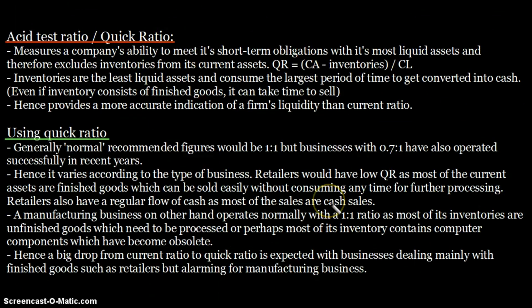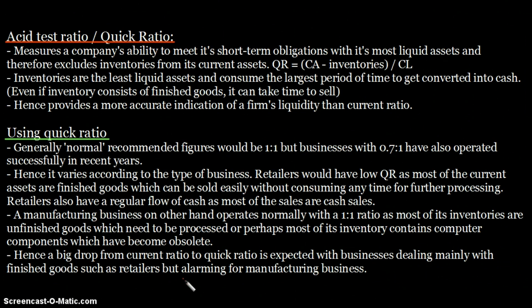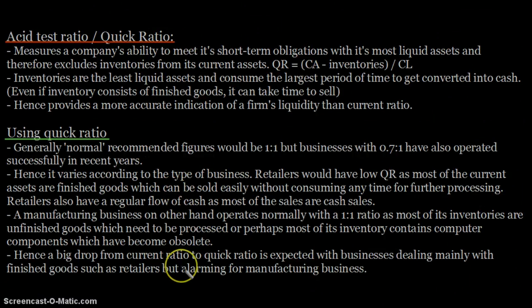If you subtract inventories from current assets to get the quick ratio, it will likely be less than the current ratio. A big drop from current ratio to quick ratio is expected for businesses dealing mainly in finished goods such as retailers, but would be alarming for manufacturing businesses. Retailers naturally hold more finished goods, cash purchases, etc. We'll discuss the remaining points on quick ratio in the next lecture before moving on to profitability ratios. Thanks for watching.